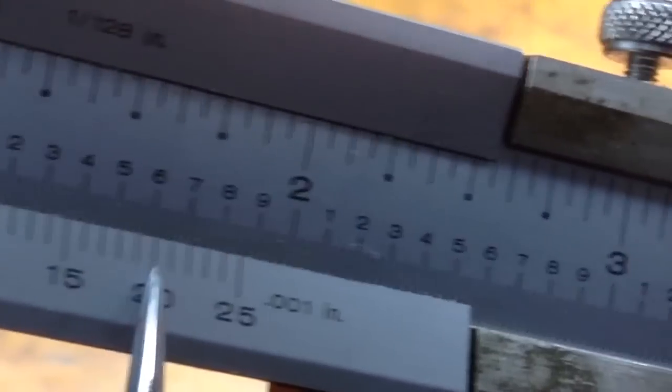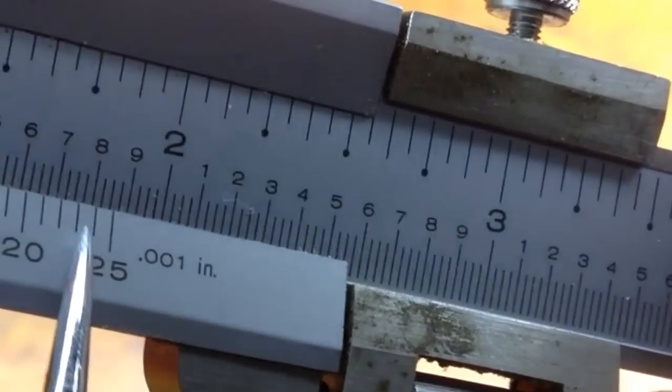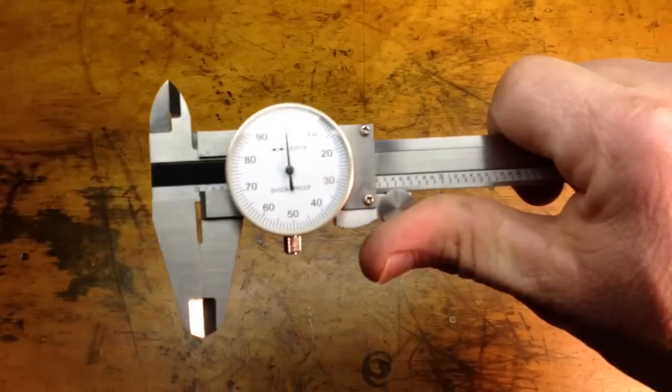And it looks like the 22 is lined up, so we take the .625 plus .22, so we end up with .642 for that one.